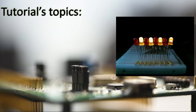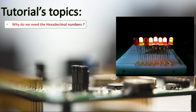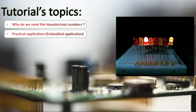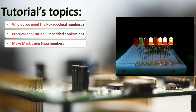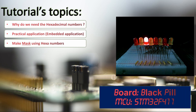Hey everyone! Welcome again to this new episode for the STM32 tutorial. In the previous video we looked at binary operations and understood how useful they are. Today we are going to focus on the hexadecimal number. First we need to understand why we need hexadecimal — we already have decimal and binary, why do we need a third one? After that we'll have a practical application to see how useful they can be in embedded applications, and we'll make a mask using hexadecimal numbers. We are going to use the black pill board with the STM32F411 MCU.